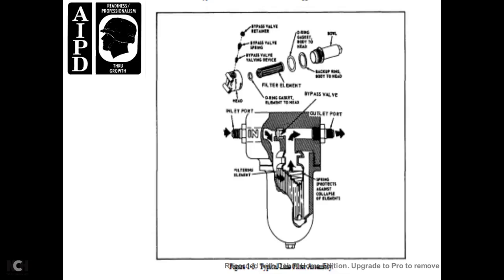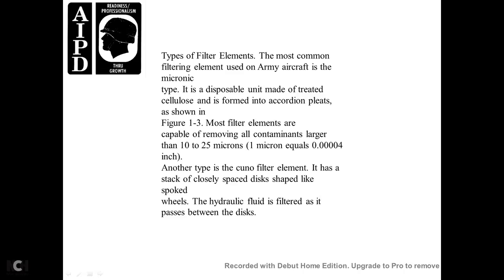Types of Filter Elements. The most common filtering element used in Army aircraft is the micronic type. This disposable unit may be made of treated cellulose in the form of accordion pleats as shown in figure 1-3. Most filters are capable of removing all contaminants larger than 10 to 25 microns — equal to about 4 one-hundred-thousandths of an inch. Another type of filter element has a stack of closely spaced discs shaped like spoke wheels. The hydraulic fluid is filtered as it passes between the discs.